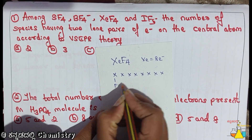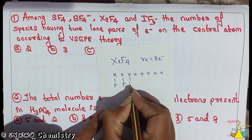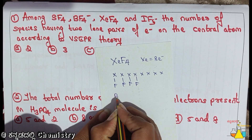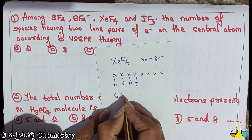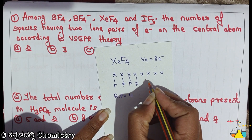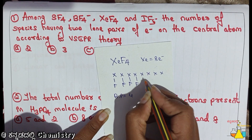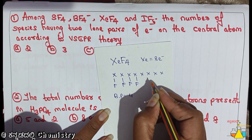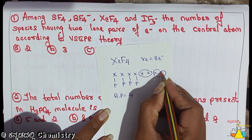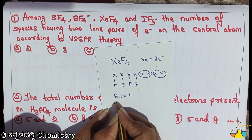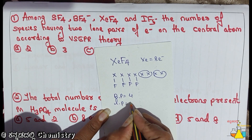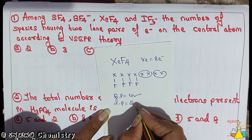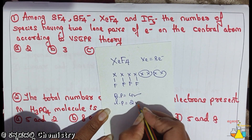So, 1, 2, 3, 4. Bond pairs is 4. Lone pairs is 4. The 8 electrons which are not involved in bonding — so lone pairs is 4. Lone pairs which is equal to 2. So bond pairs is equal to 4, and lone pairs is equal to 2.